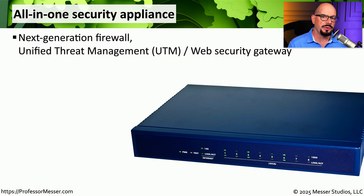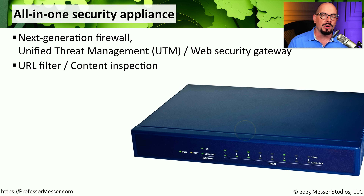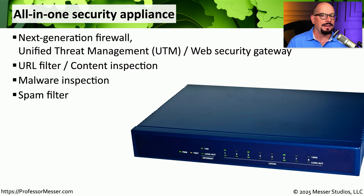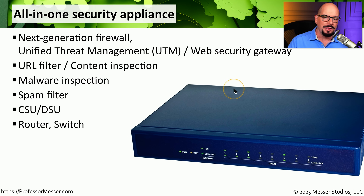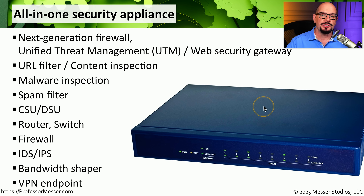Many organizations put an all-in-one security appliance on the outside of their network between them and the internet. Sometimes we refer to this as a next-generation firewall, a Unified Threat Management system (UTM), or a web security gateway. These devices combine many different functions into one single device: URL filtering and content inspection, malware detection in email messages or real-time network traffic, a built-in spam filter, and possibly a CSU-DSU for older wide-area network connections. On the back may be router and switch interfaces with firewall functionality, IPS functionality, bandwidth shaping, and even VPN functionality that allows secure connections to other sites or direct secure connections from end users.